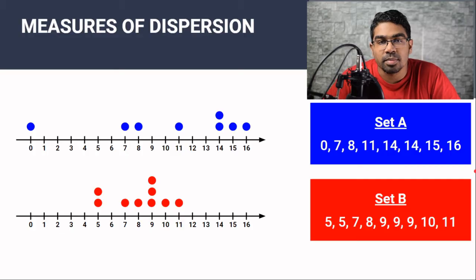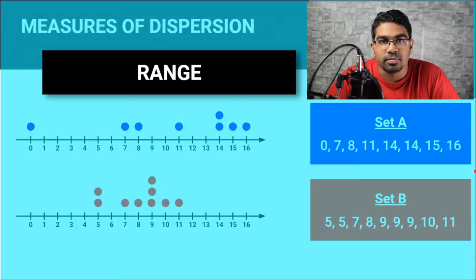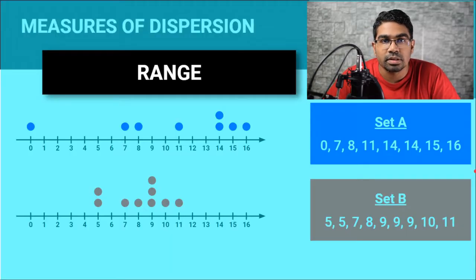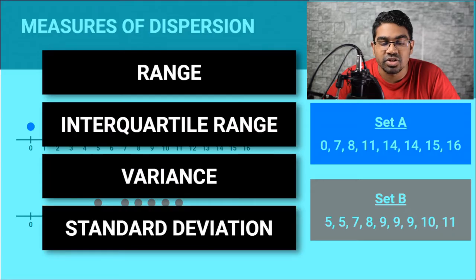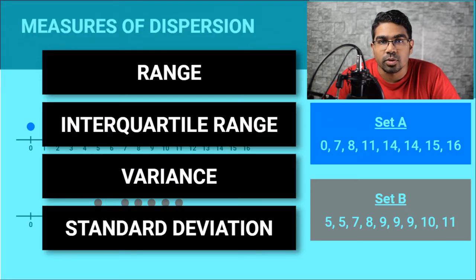Generally there are four measures of dispersion. First is the range, interquartile range, variance and standard deviation. In this video, I am only covering range and interquartile range.